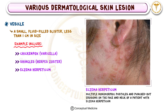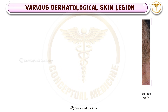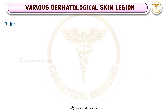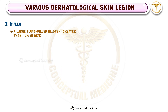Another example is eczema herpeticum, where vesicles cluster on inflamed skin. When a vesicle becomes larger than one centimeter, it's called a bulla.